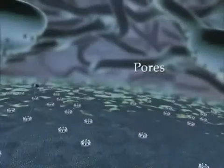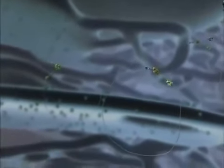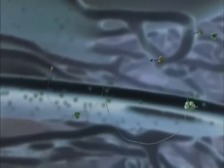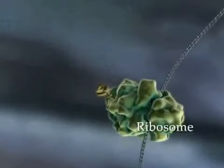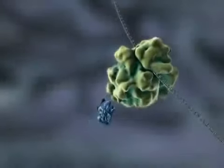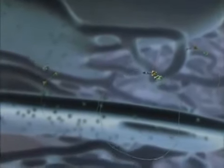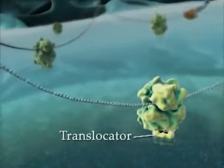Pores in the nuclear envelope allow the import of particles containing mRNA and proteins into the cytosol. Here, free ribosomes translate the mRNA molecules into proteins. Some of these proteins will reside in the cytosol. Others will associate with specialized cytosolic proteins and be imported into mitochondria or other organelles. The synthesis of cell-secreted and integral membrane proteins is initiated by free ribosomes, which then dock to protein translocators at the surface of the endoplasmic reticulum.